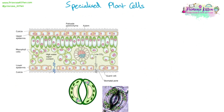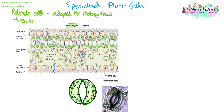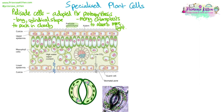We also need to know some examples of specialised plant cells. The palisade cells in the leaf are adapted for photosynthesis — to absorb as much light as possible. They're long and cylindrical in shape, so they can be packed closely together, fitting more cells into this tissue layer. They also have lots of chloroplasts to absorb more light energy to carry out photosynthesis — more chloroplasts than a normal plant cell. This is how they are specialised.